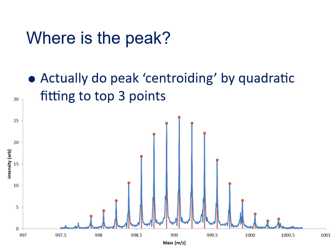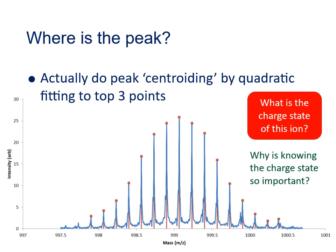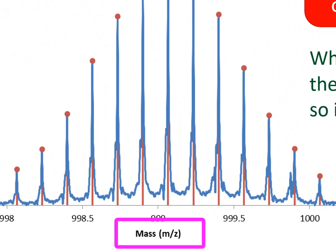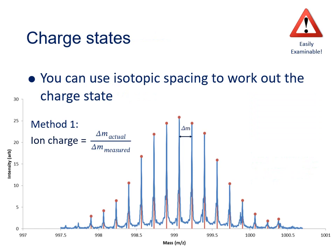Looking at this particular example, the next question we might ask is: what's the charge state of this ion, and why is knowing the charge state so important? The reason why the charge state is important is because in mass spectrometry we don't measure the mass of ions directly, we measure the mass to charge ratio. So we need to know the charge in order to work out the actual mass of the ion, which is going to help us identify it.